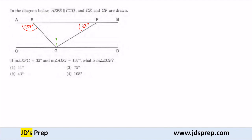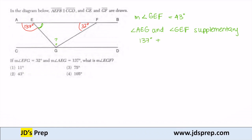The first thing we're going to figure out is the measure of GEF, this angle here. The measure of GEF is going to be 43 degrees. The way that we know that is AEG and GEF are supplementary angles. Supplementary angles add up to 180 degrees, so AEG, which is 137, plus the measure of GEF equals 180 degrees. Subtracting 137, we find that the measure of GEF is 43 degrees, so we can fill that in.